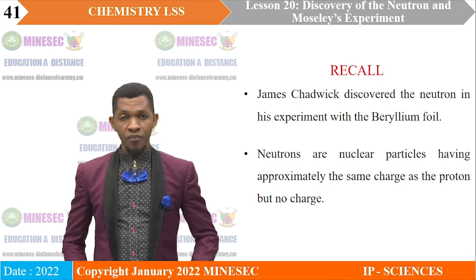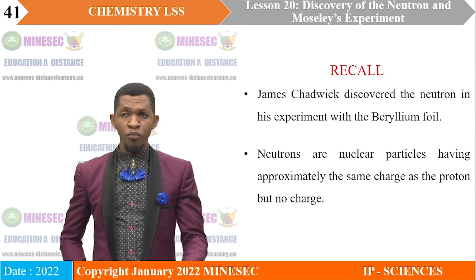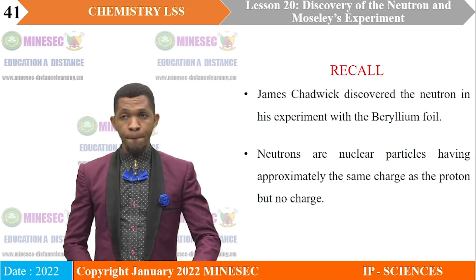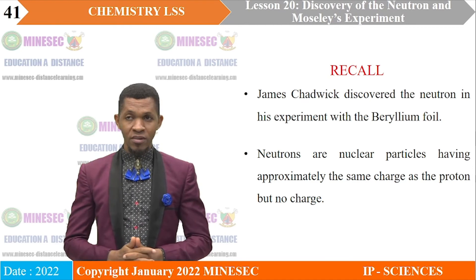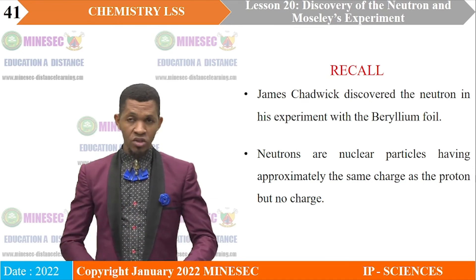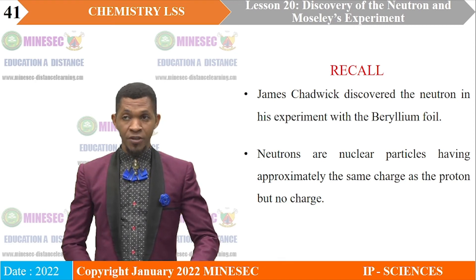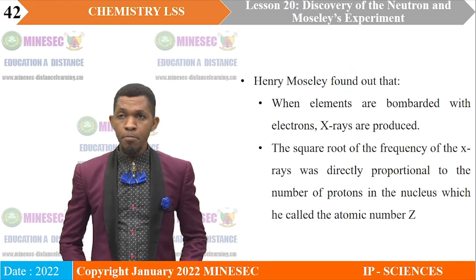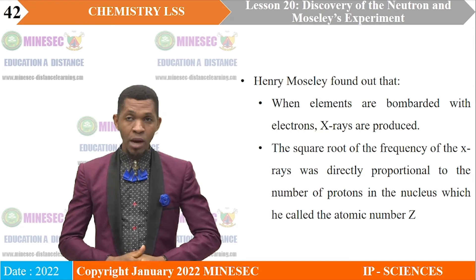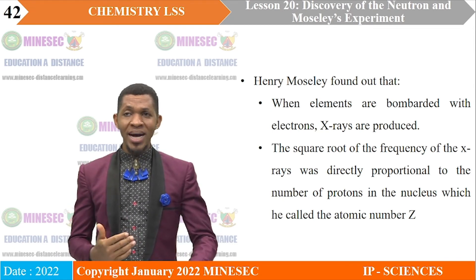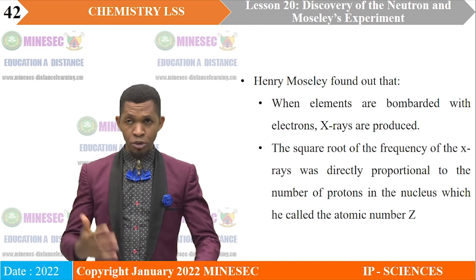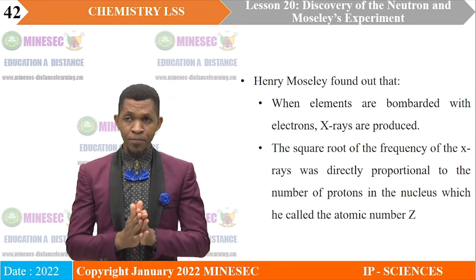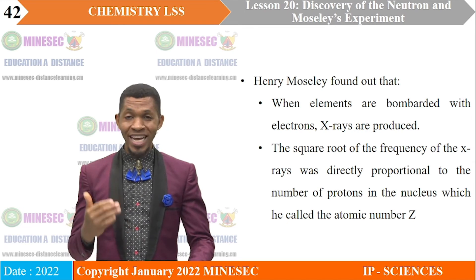Recall: James Chadwick discovered the neutron in his experiment with the beryllium foil. Neutrons are nuclear particles having approximately the same mass as the proton but no charge. Henry Moseley found that when elements are bombarded with electrons, X-rays are produced. The square root of the frequency of the X-rays was directly proportional to the number of protons in the nucleus, which he called the atomic number.